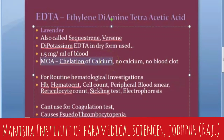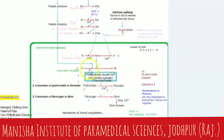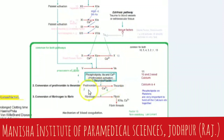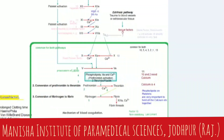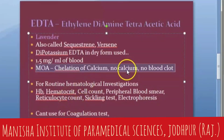How does EDTA work? EDTA does chelation of calcium. Without calcium there can be no blood clot — you remember the coagulation cascade with the intrinsic and extrinsic pathways. In the common pathway, calcium is needed for factor 10 activation, for conversion of prothrombin to thrombin, and more. Calcium is factor 4. So factors 11, 10, and 2 all need calcium — without calcium, no blood clot.